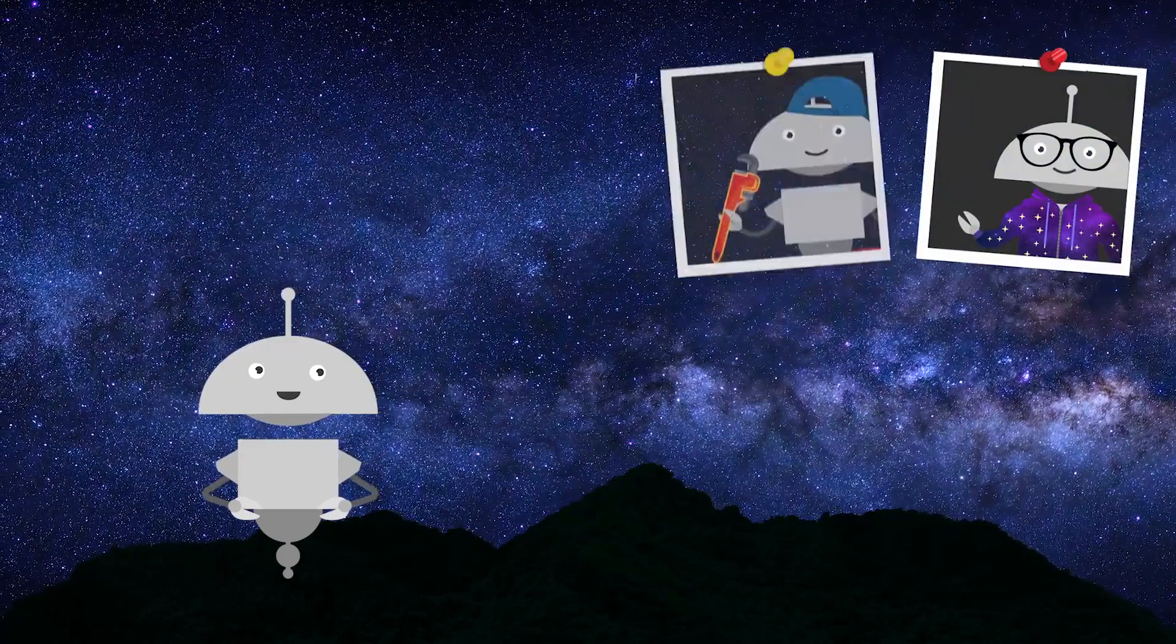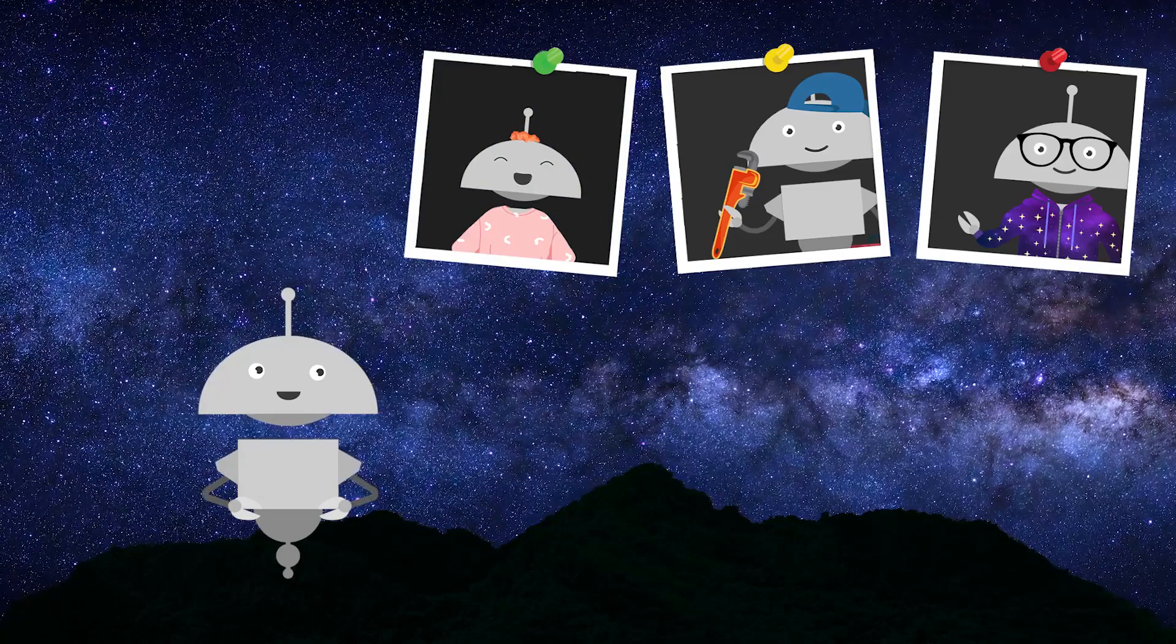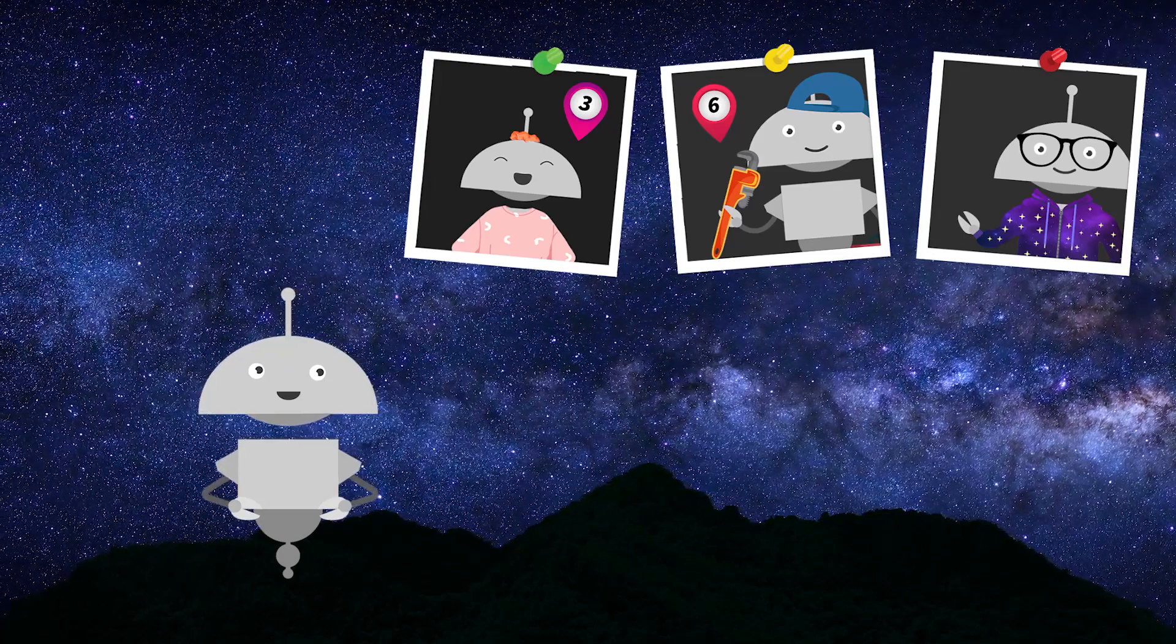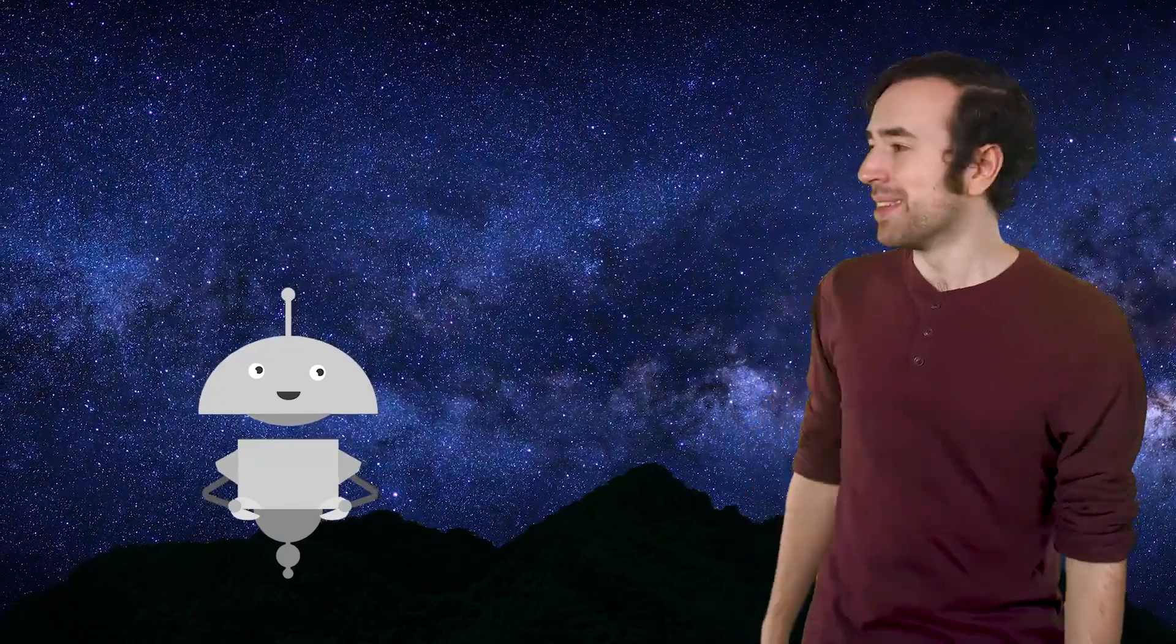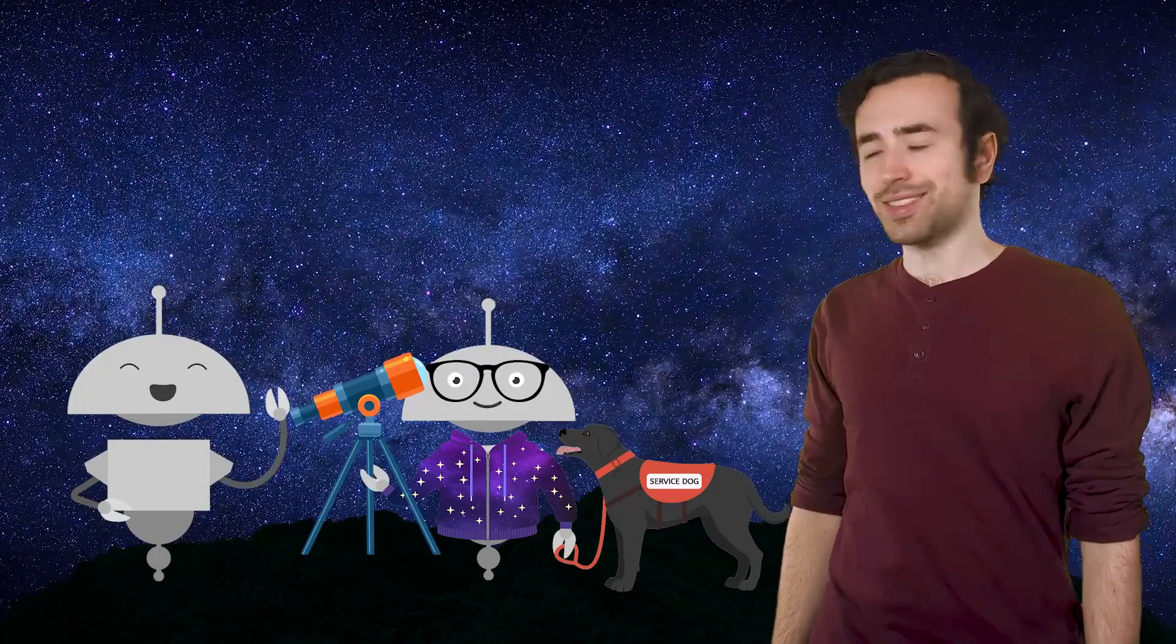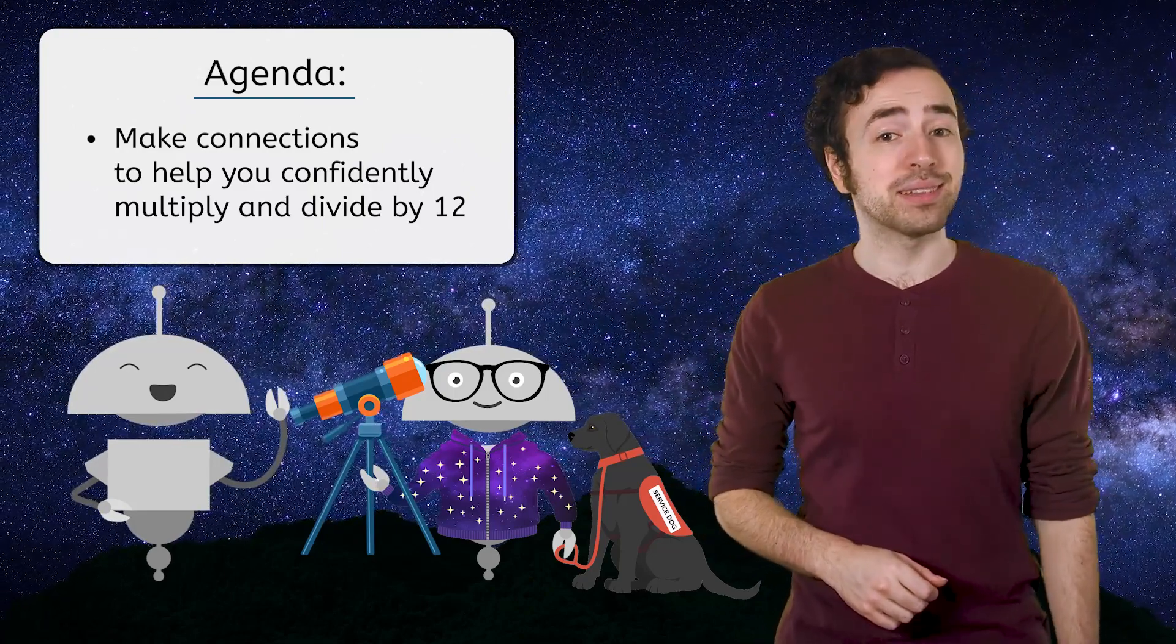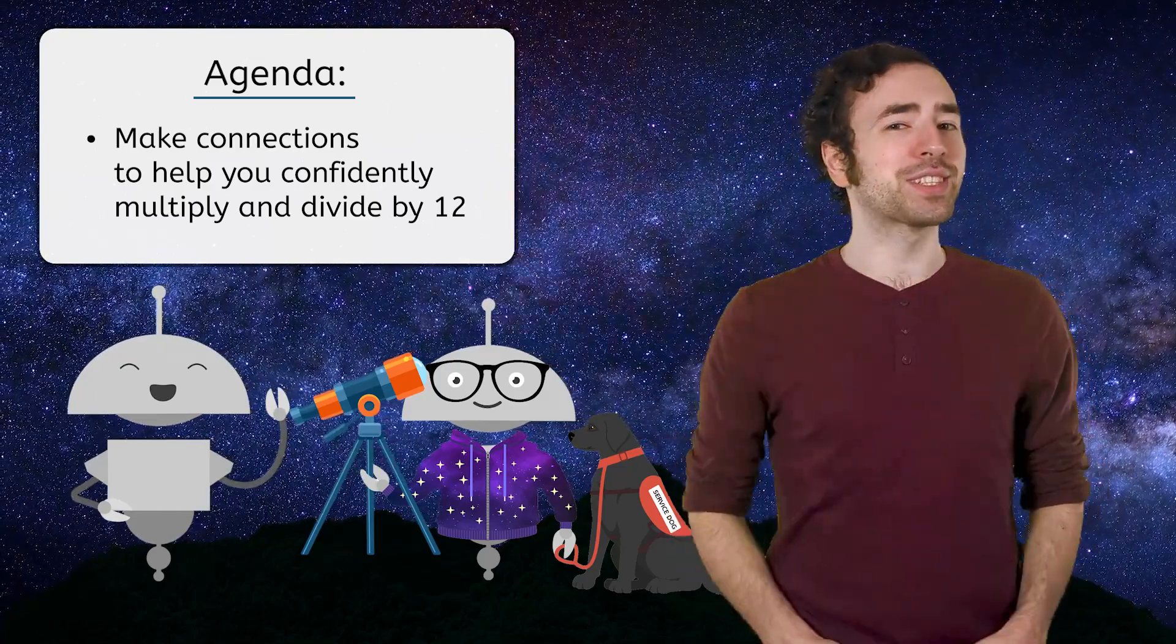Twyla also happens to be Felix's sister, which means she's Bree's aunt too. Bree helped us with our threes, Uncle Felix helped us with our sixes, and today Aunt Twyla is going to help us with our twelves. Oh, here they come. Hi, Twyla. A telescope, what a great idea! By the end of today's lesson, you'll be able to make connections to help you confidently multiply and divide by 12. Have your guided notes ready, and let's reach for the stars.